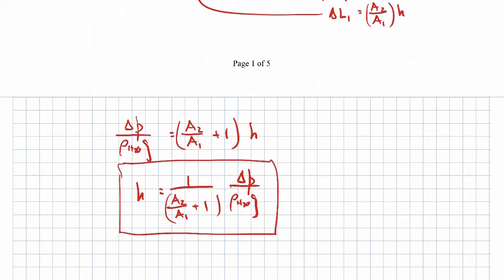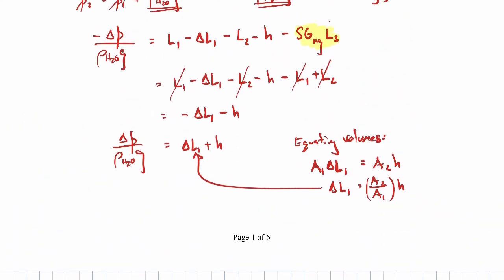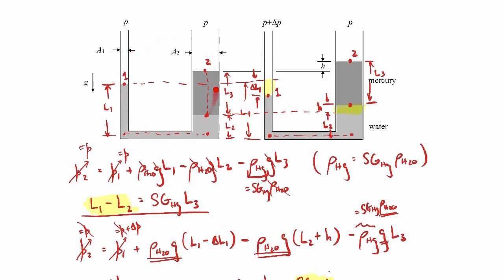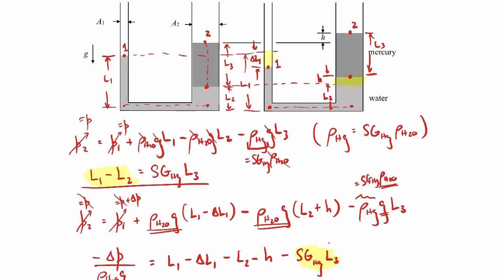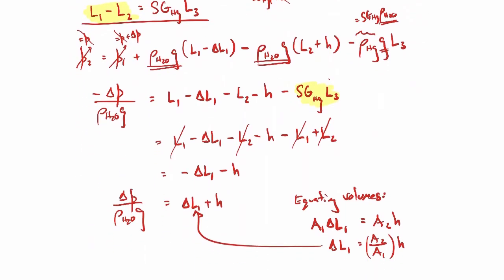That's part A — finding the height in terms of the other quantities. To summarize: we analyzed the manometer initially to get our first expression, then analyzed it after applying the pressure with the changed geometry, and finally used volume conservation — recognizing that the volume that goes down on the left equals the volume moved upward on the right.